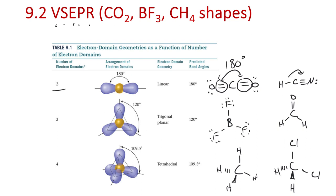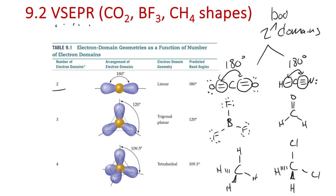The same thing applies to something like HCN — we're still counting this as one domain and two domains. A set of bonds to one atom counts as one domain. So a triple bond is one domain, a double bond is one domain, a single bond is one domain. It's just a matter of how many total domains we have. So HCN has two bonding domains.